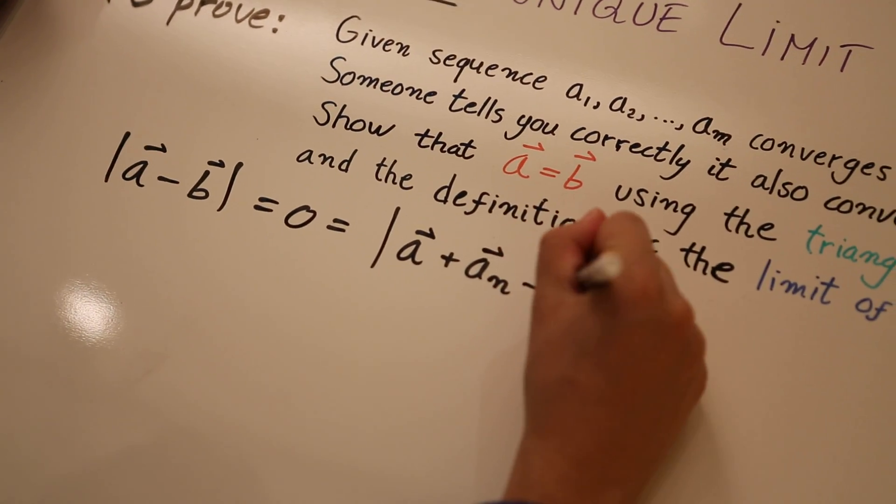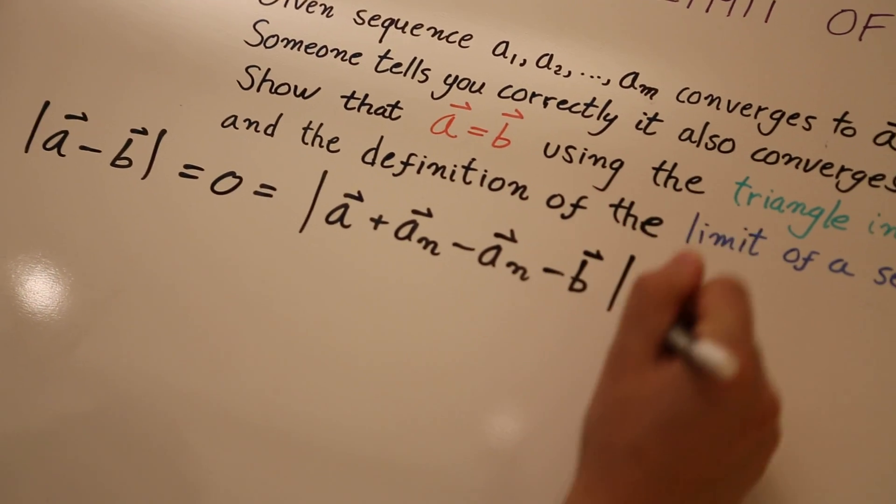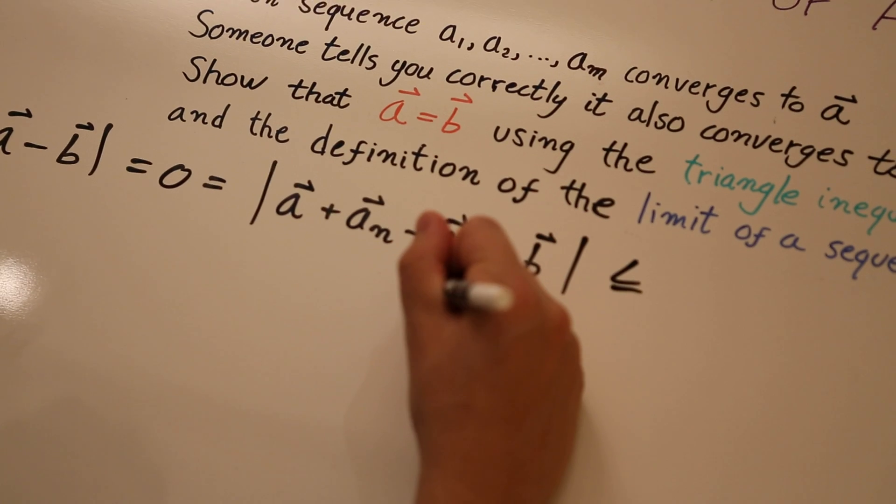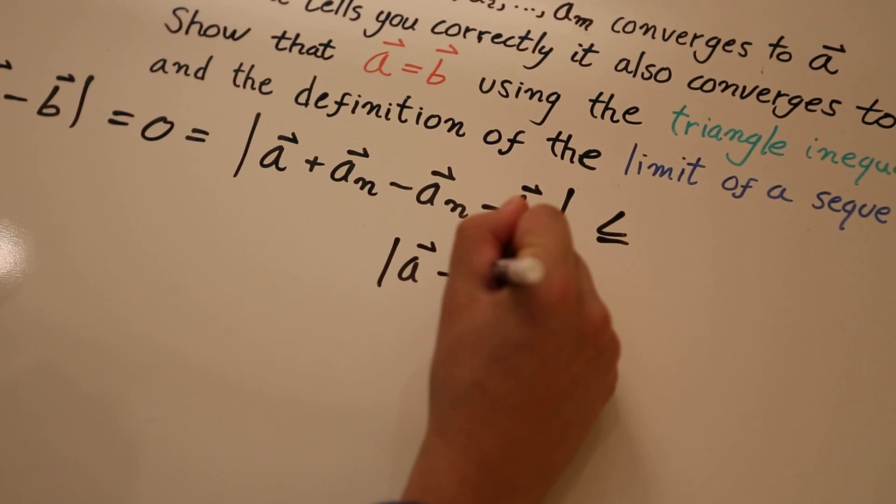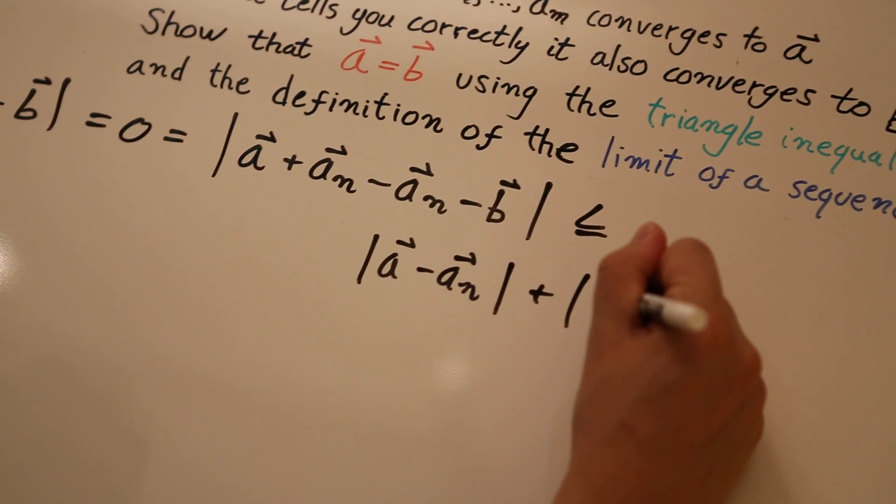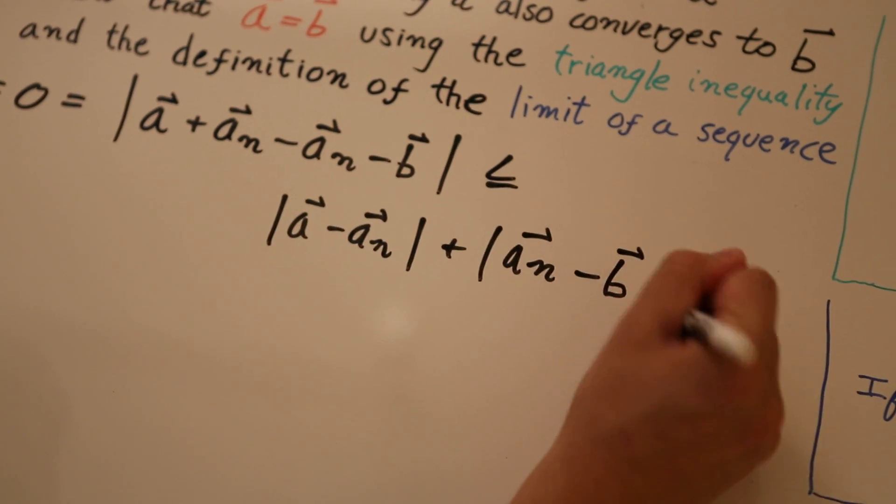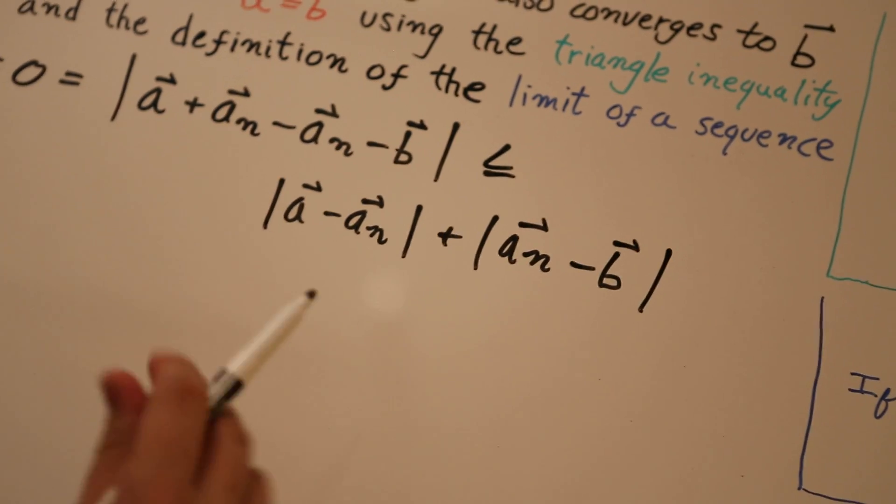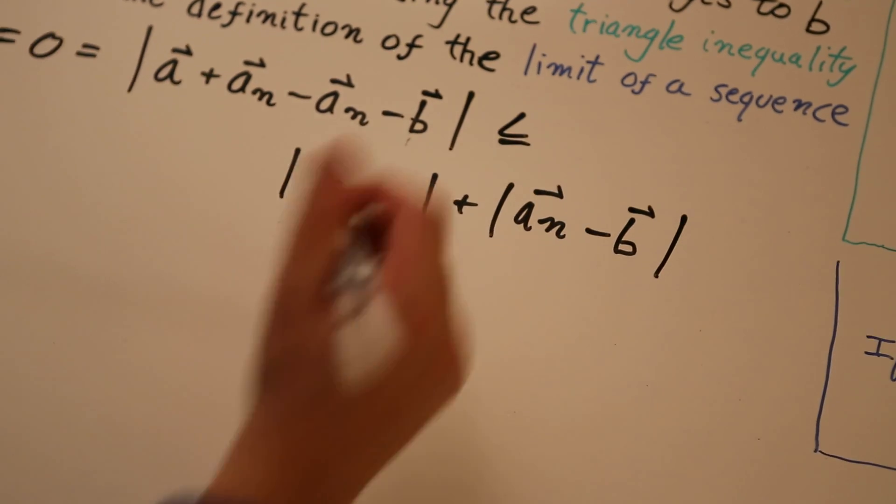Suppose we add and subtract AN minus B here. Now, if we apply the triangle inequality, that's the same as saying A minus AN plus AN minus B. Now, because this is the absolute value, I can just switch these two here, no problem.